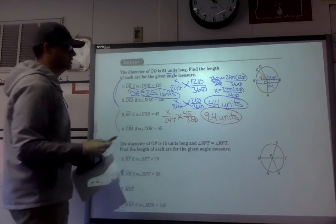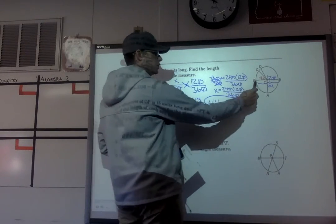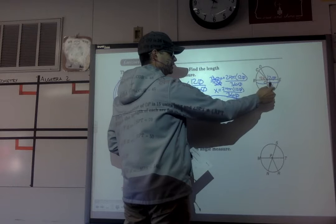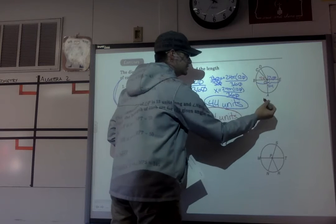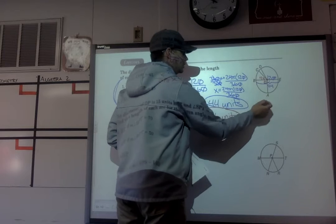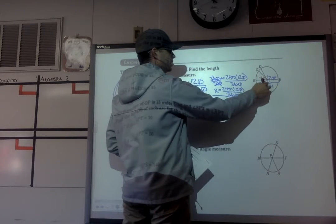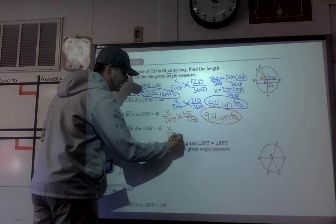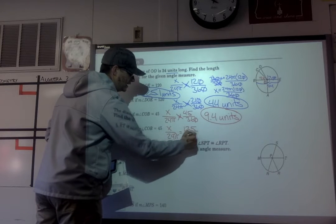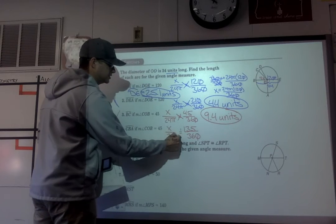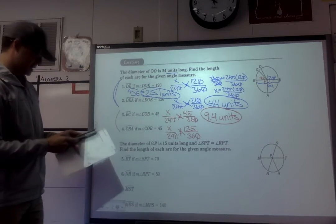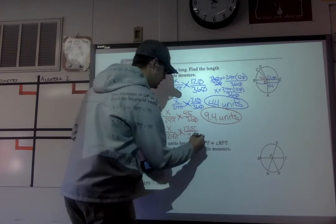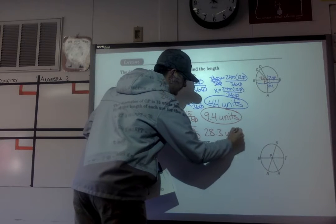One more — finding arc CBA. BE is a diameter, meaning 180 degrees total. If one part is 90 degrees, then BOA is also 90 degrees. For arc CBA, the interior measure is 135 degrees. So x over 24π equals 135 over 360, and 24π times 135 divided by 360 gives us 28.3 units.